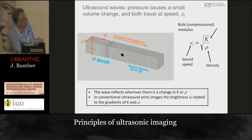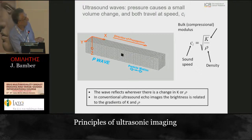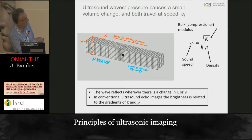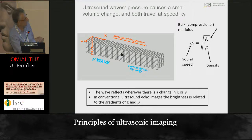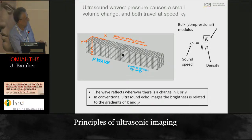The amount by which the volume changes for a given change in pressure determines the compressibility coefficient, and the square root of the ratio of these two determines how fast the sound travels. The higher the compressibility coefficient, the faster the sound; the more dense the tissue, the lower the speed.